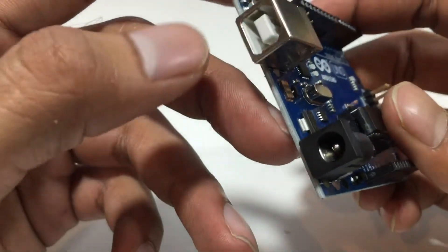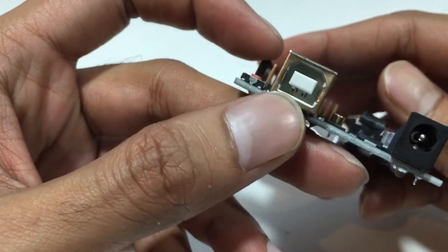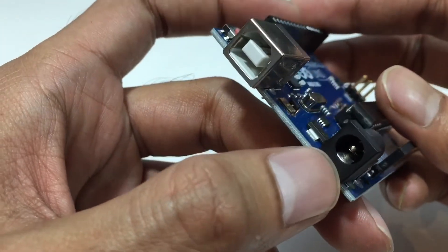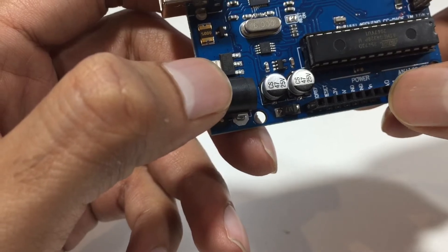You can power up this Arduino by 3 ways. This is for the USB B printer. This is the DC 5.5mm jack. And we can also use VIN input pin and the ground pin.